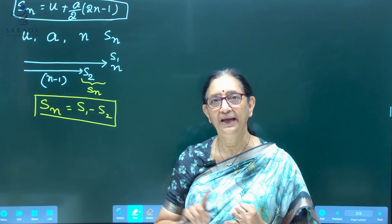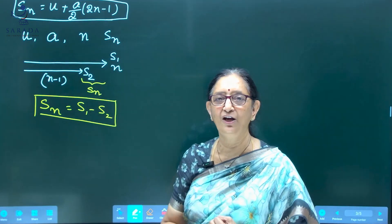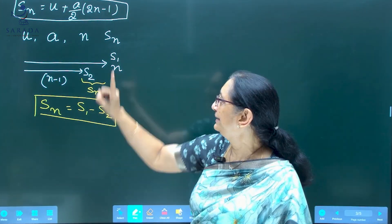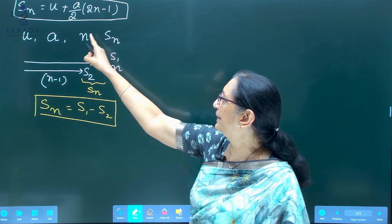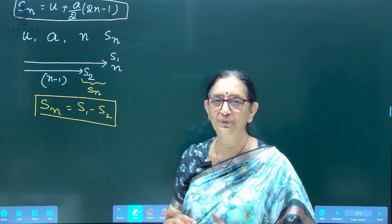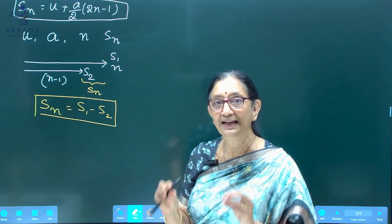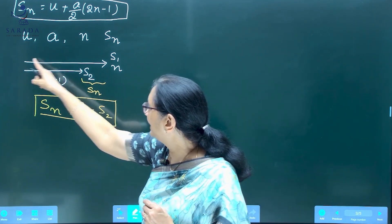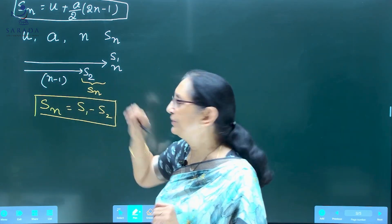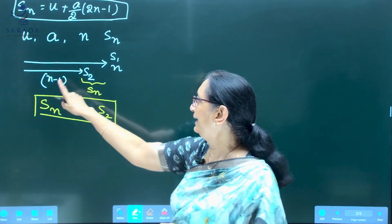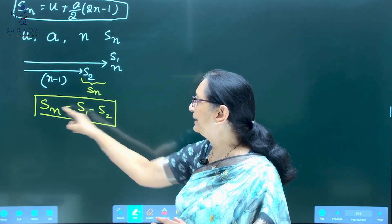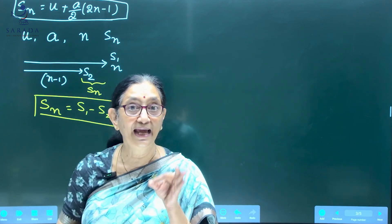So we have considered a body starting with an initial velocity U moving with uniform acceleration A. SN is the displacement in the Nth second of that body. S1 is the displacement of the same body in N seconds. S2 is the displacement of the same body in N − 1 seconds. Then S1 − S2 will be the displacement of the body in the Nth second.